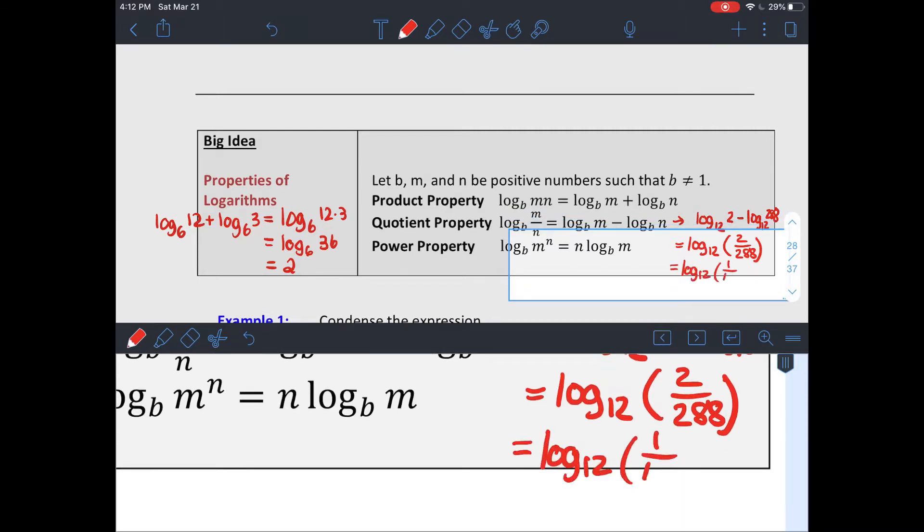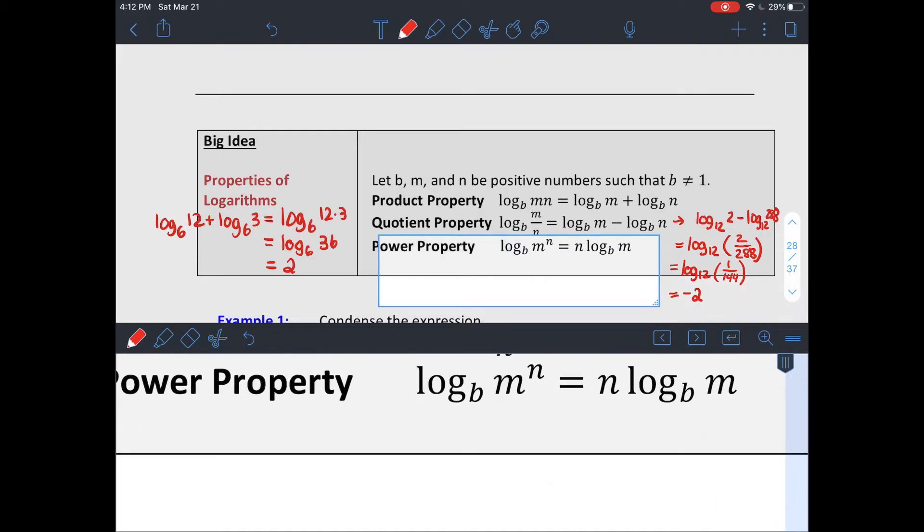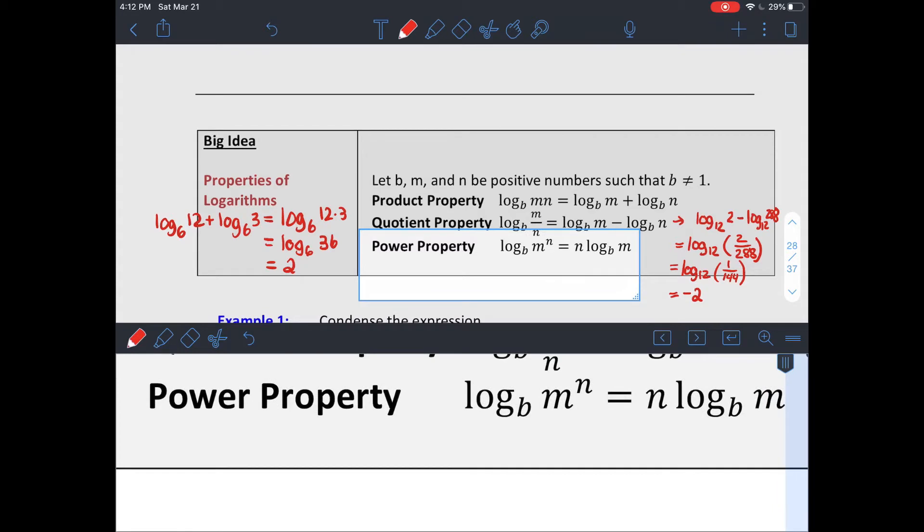Which simplifies to log base 12 of 1 over 144, which 12 to the negative second gets you 1 over 144. So that's just negative 2.